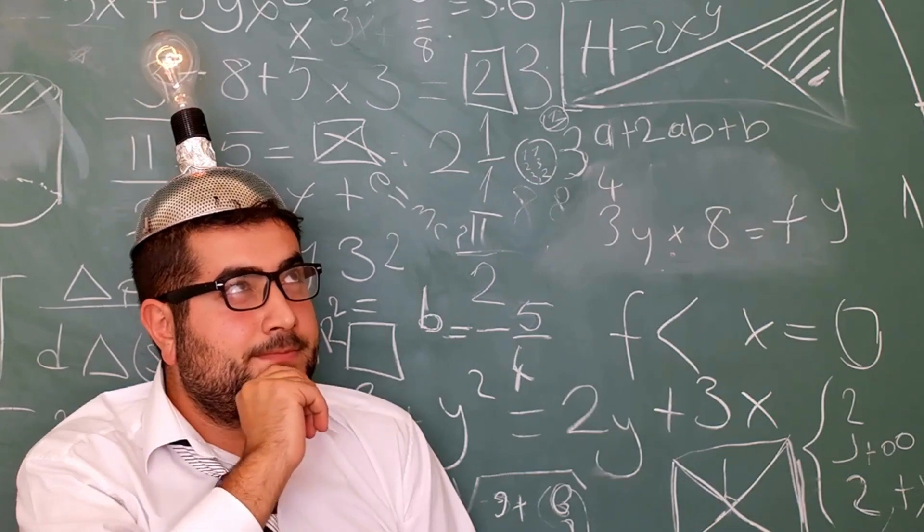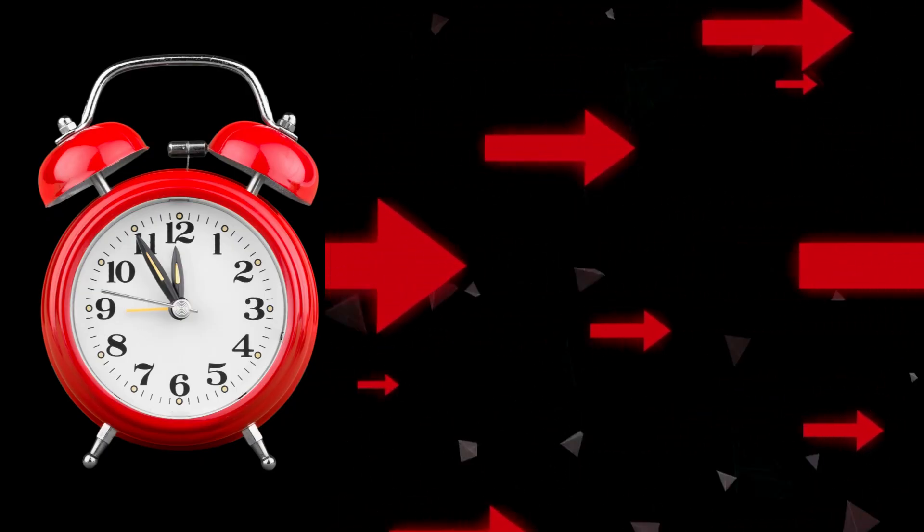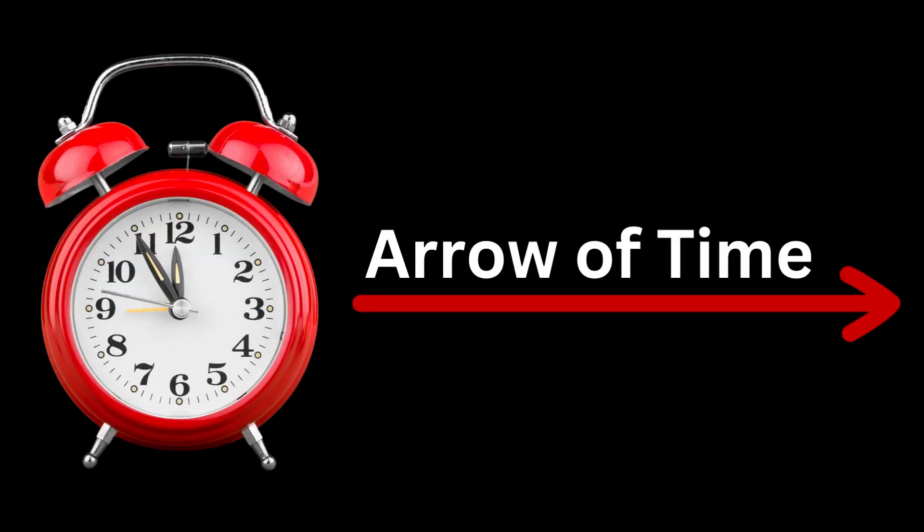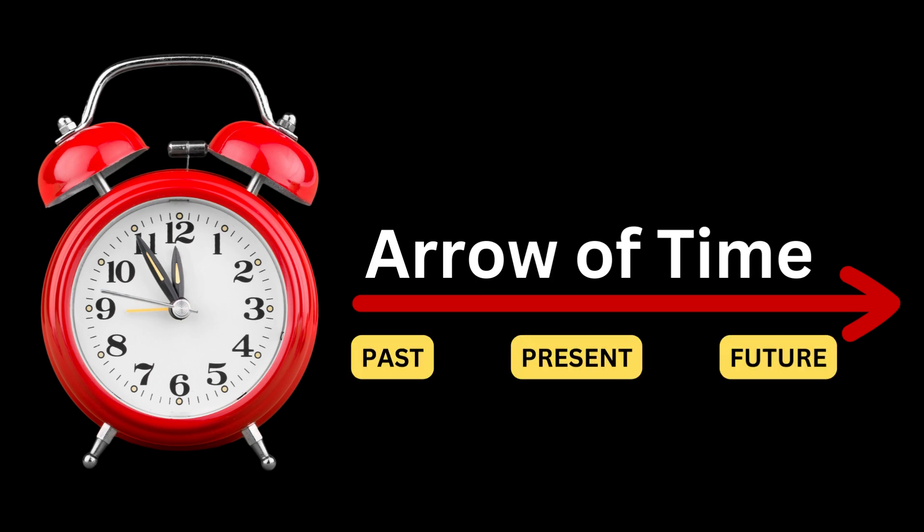A question that puzzles scientists is that time only ever moves forward from the past to the present to the future, which is known as the arrow of time. But have you ever wondered why time only moves in this direction and never backwards? It's a question that's puzzled scientists and thinkers for a long time, but the answer lies in a fundamental concept called entropy.